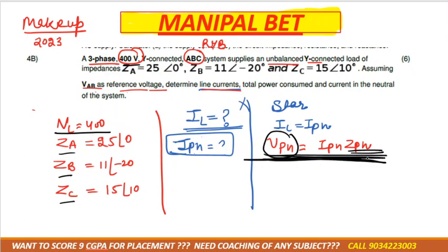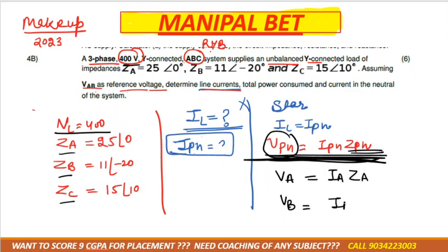Now we start from this formula. The sequence is ABC — just like RYB — so the order is AB, BC, CA. We can write: VA = IA × ZA, VB = IB × ZB, and VC = IC × ZC.